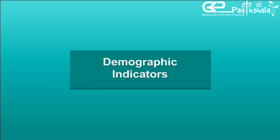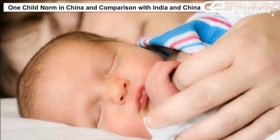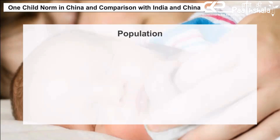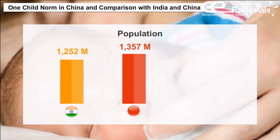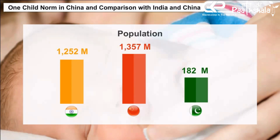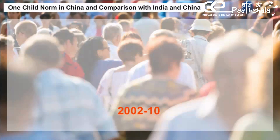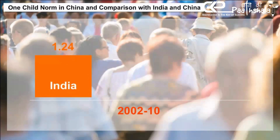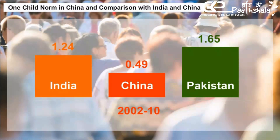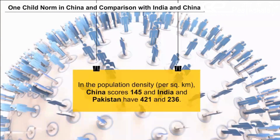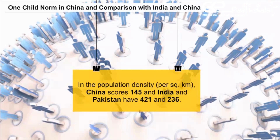Demographic Indicators — One-Child Norm in China and Comparison with India and Pakistan. The estimated population is 1,252 million in India, 1,357 million in China, and 182 million in Pakistan. The annual growth rate of population between 2002 and 2010 was 1.24% in India, 0.49% in China, and 1.65% in Pakistan. In population density per square kilometer, China scores 145, while India and Pakistan have 421 and 236 respectively.